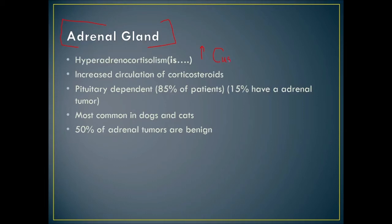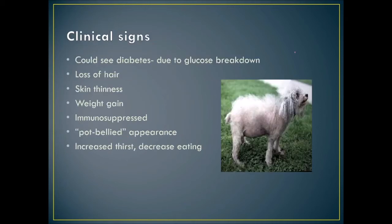If it's an adrenal tumor, it's an abdominal tumor, and 50% of those are benign. Dogs with Cushing's show hair loss, a big flaccid abdomen, and may appear overweight due to changed fat deposition and decreased muscle mass. We can see diabetes due to glucose dysregulation. Signs include loss of hair, thin skin, weight gain, immunosuppression, pot-belly appearance, increased thirst, and decreased eating — they drink a lot of water.